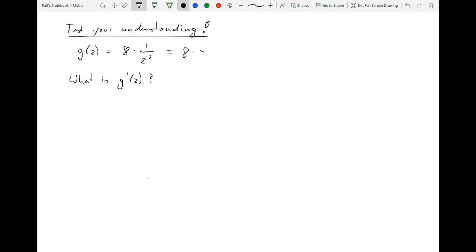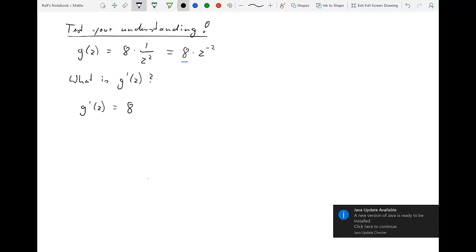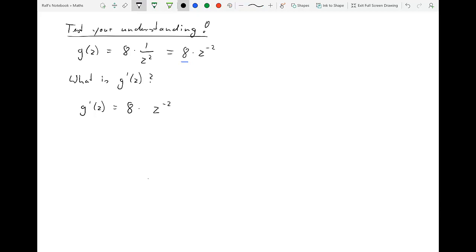So here we are back for the solution. First it's possibly easiest to reformulate the function g of z into 8 times z to the negative 2. And then we apply our rule. g prime z is the following. That 8 is just a factor. It just translates 8 times. And now the power derivative, negative 2 in front, subtract 1 from the exponent, and what we are left with is negative 16 times z to the power of negative 3.